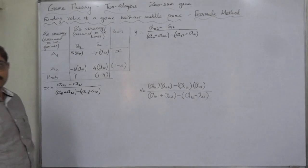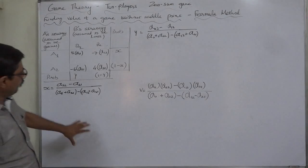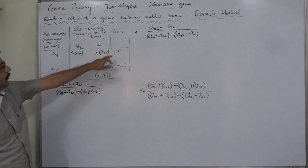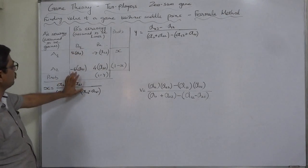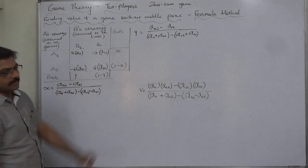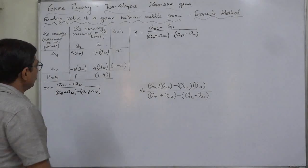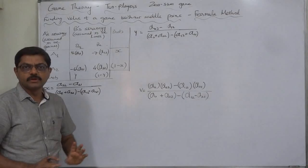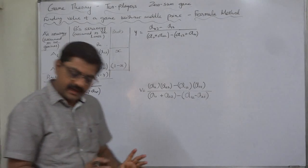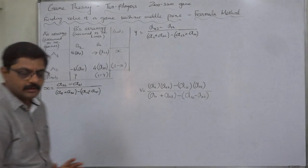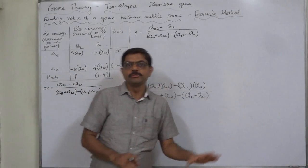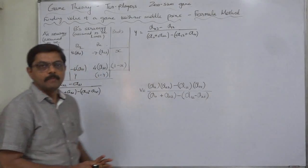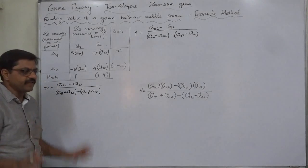We are not going to use any algebraic method but we have formula to find out X that is the probability of A using strategy A1 and Y that is probability of B using strategy B1 and value of game. This is possible in case of the 2 by 2 payoff table game. If a game is of larger size we have to reduce it up to 2 by 2 by the method of dominance if it is possible.